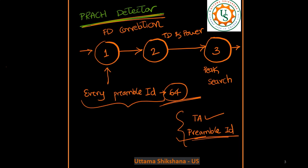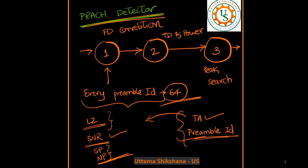Apart from these things, what other parameters will be reported to L2? It depends on the MAC scheduler algorithm. Usually the scheduler will be requesting SNR to be reported as well. Apart from that, it could be signal power, noise power, and many other measurements — it all depends on the design of the MAC scheduler.